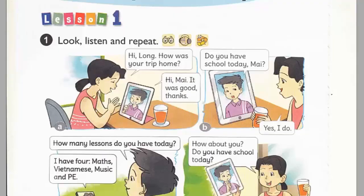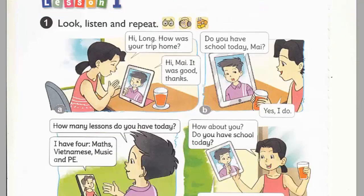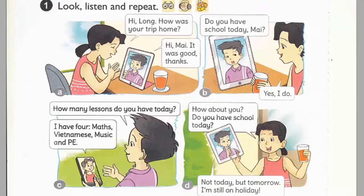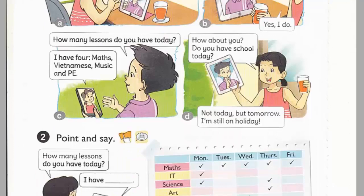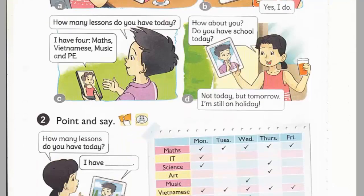B. Do you have school today, Mai? Yes, I do. C. How many lessons do you have today? I have four.